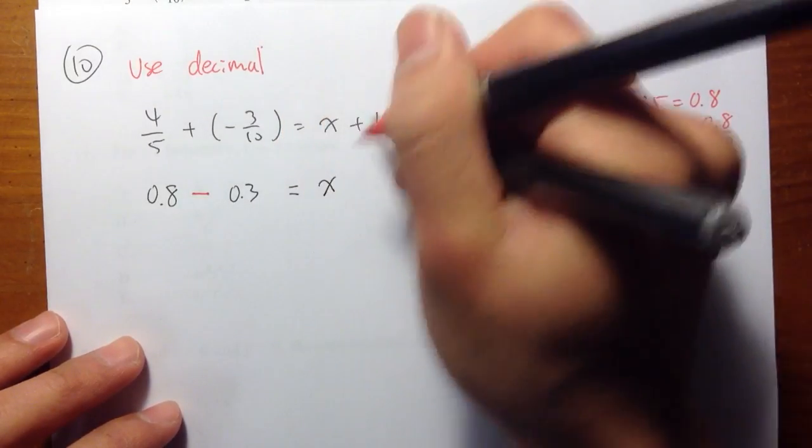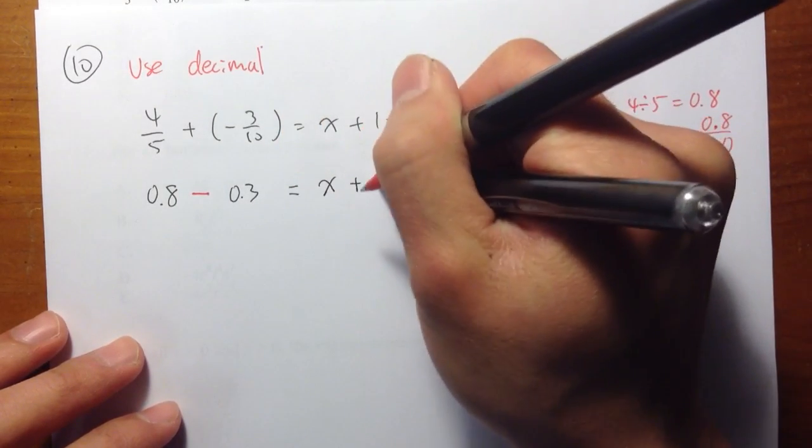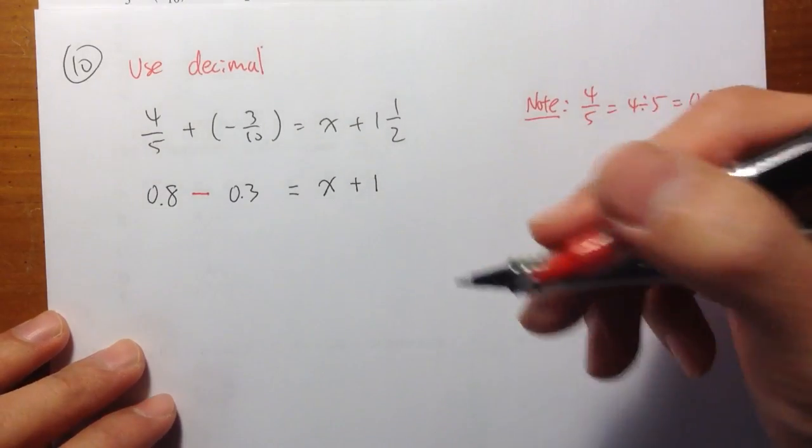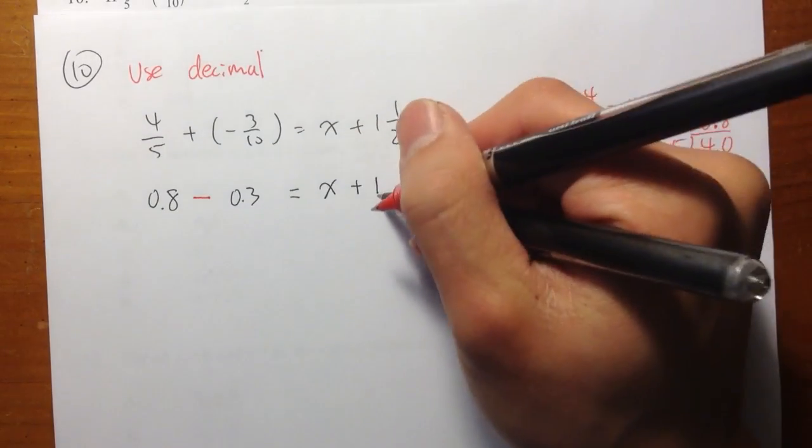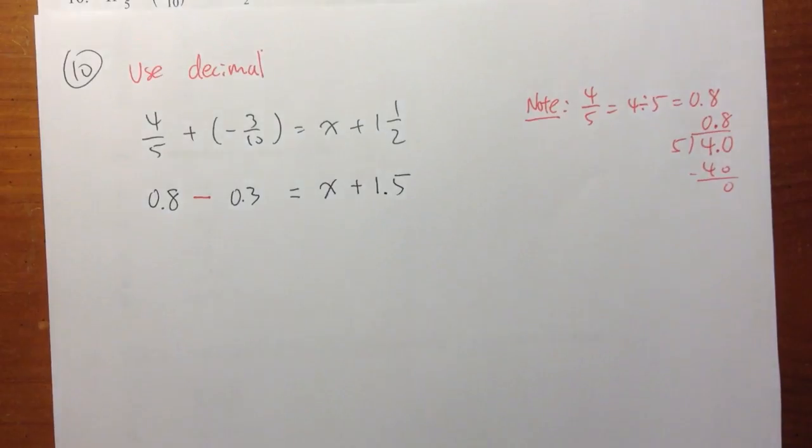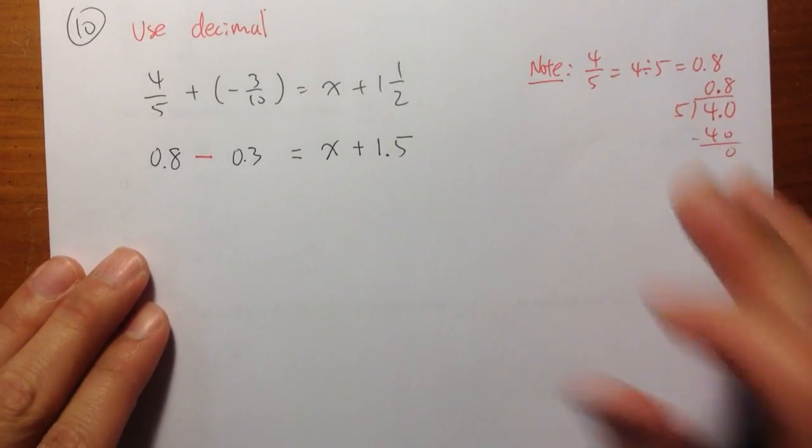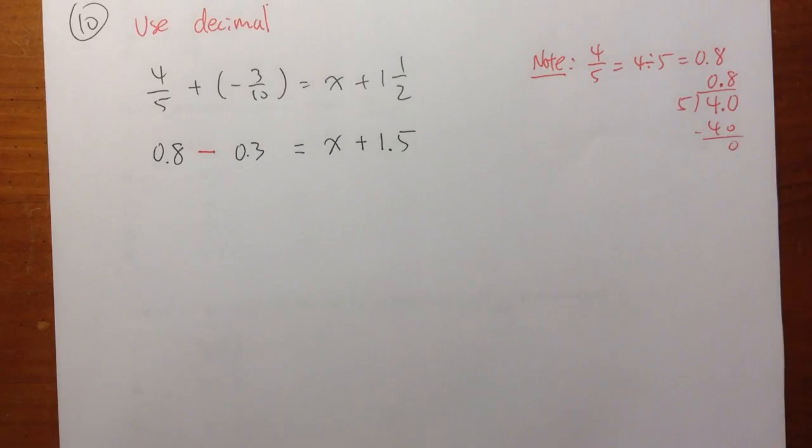Equals to x plus 1 and a half. The half is the same as saying 0.5, so I can write this as 1.5. x from which we can just now do some usual calculations. No more fractions, much happier.